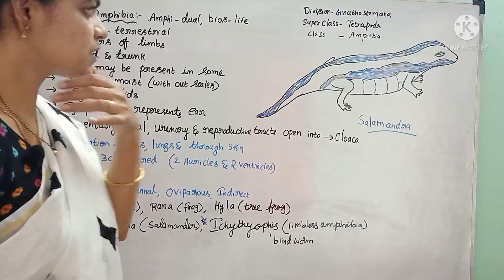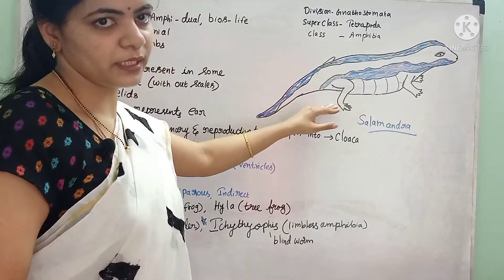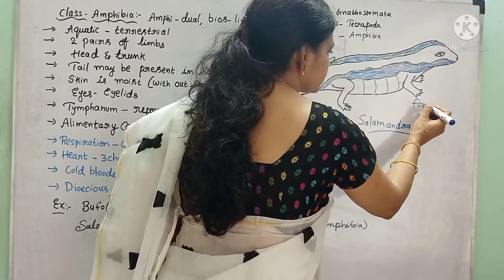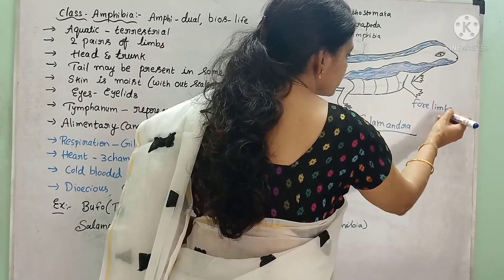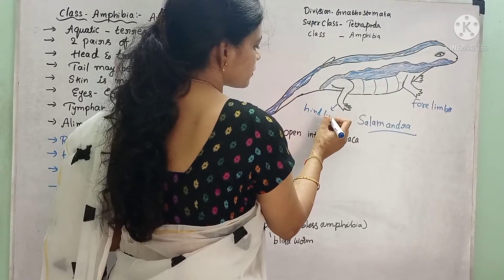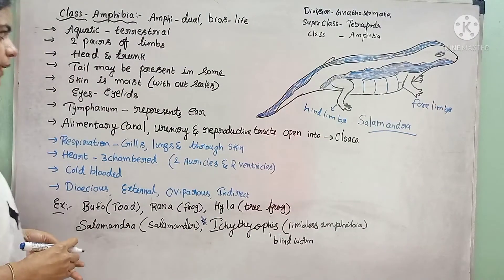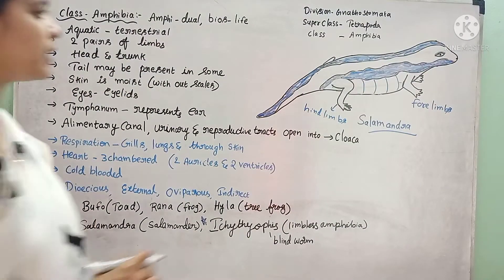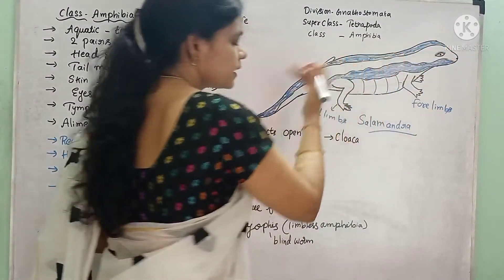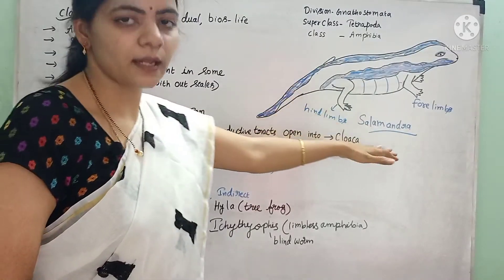If you see the animals — for example, this is a salamander. It consists of front two limbs and back two limbs. The front two limbs are called forelimbs and the back two limbs are called hind limbs. They have two pairs of limbs and the body is divided into head and trunk. In some animals, the tail is also present, like salamander.